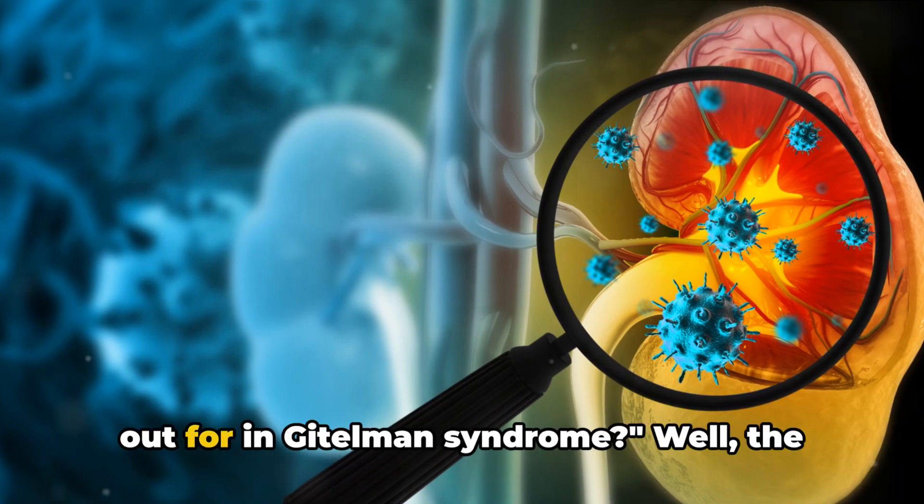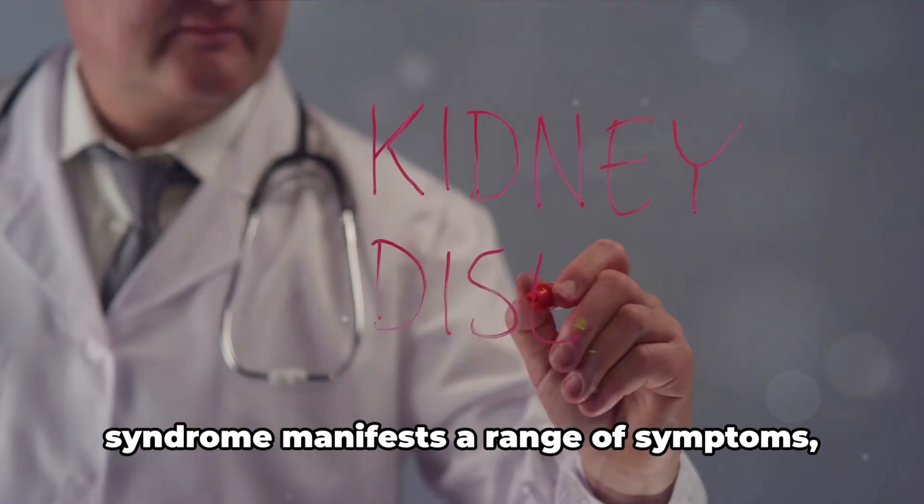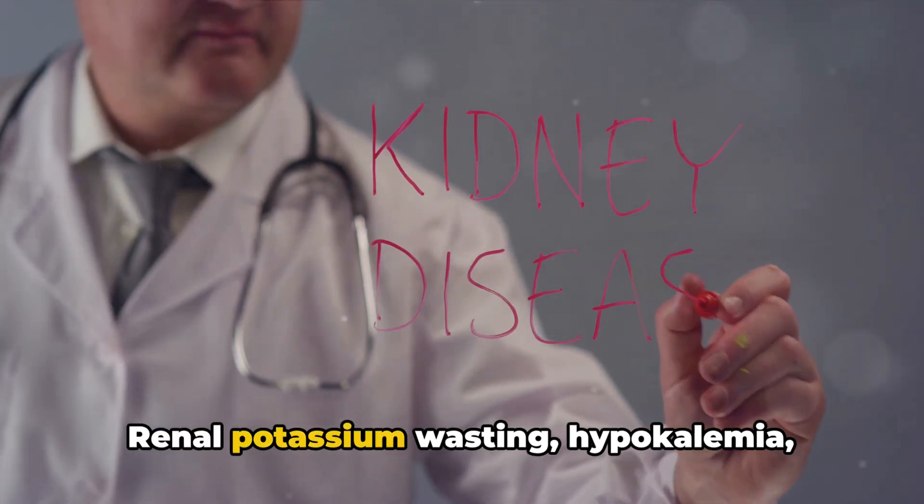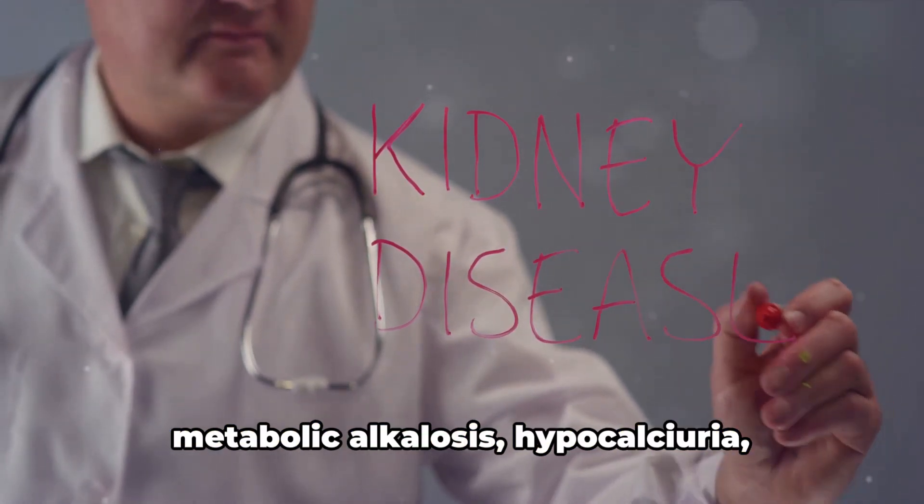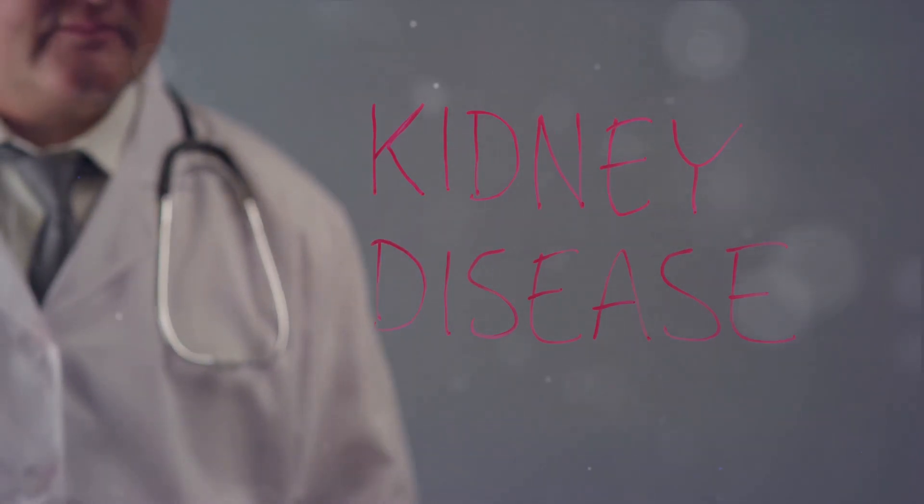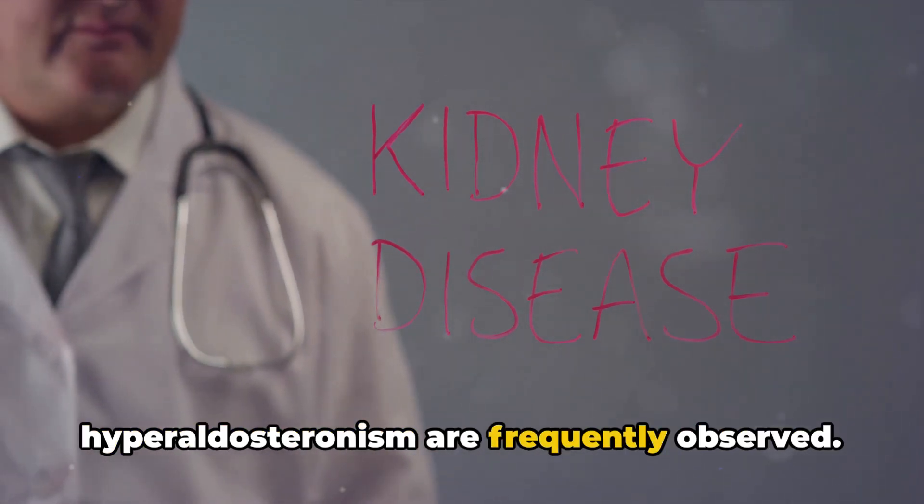What are the signs and symptoms to look out for in Gitelman syndrome? Well, the syndrome manifests a range of symptoms, some more common than others. Renal potassium wasting, hypokalemia, metabolic alkalosis, hypocalcuria, hypomagnesemia, and hyperreninemic hyperaldosteronism are frequently observed.